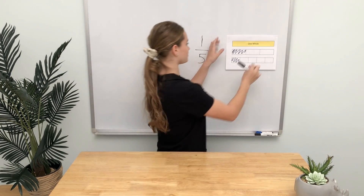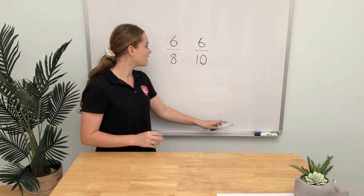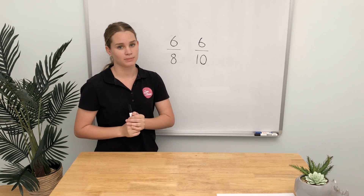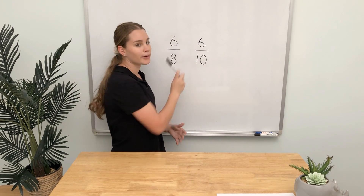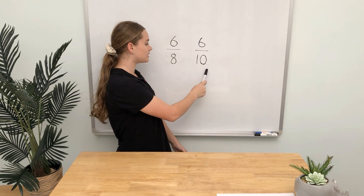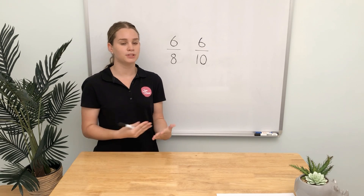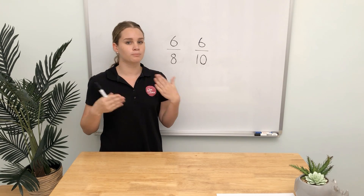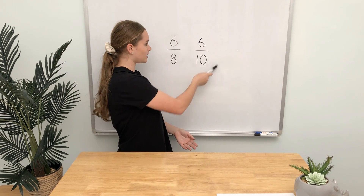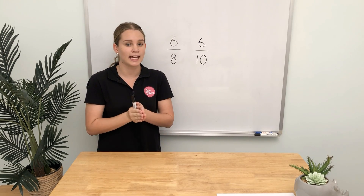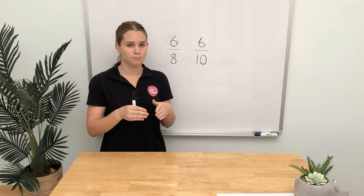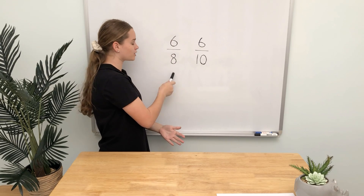Let's try another one. Now we have two more fractions up on the board: six-eighths and six-tenths. What can you notice just by looking at these two numbers? We know that they have the same numerator — they both have six — but they have different denominators. The denominator in this fraction is 8, so we know there are 8 equal parts in that whole. The denominator in this fraction is 10, so we know there are 10 equal parts in that whole. This fraction has fewer parts, so each part must be bigger — that's how we know this fraction is greater.